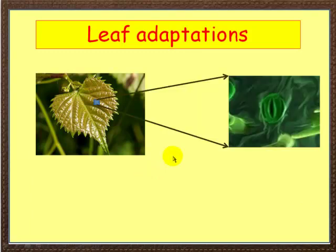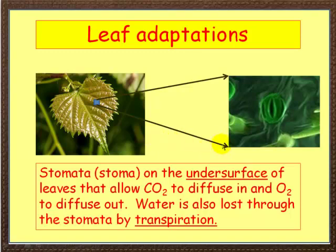If we look in a little detail now at the surface, what we'll find is you get these little perforations here. This is showing the upper surface of the leaf, but in fact most stomata are found on the undersurface — just remember that. Stomata, which are these little holes here (singular: stoma), on the undersurface of leaves allow carbon dioxide to diffuse in and oxygen to diffuse out. We also lose water through these stomata by a process called transpiration.